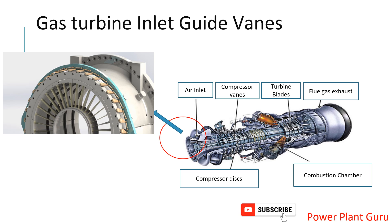In the last video we saw how air is filtered from the inlet filter house and comes to the gas turbine. Now, how do we control the quantity of air coming to the turbine? During startup it may require a small amount of air; at 50% load it will need a different amount; at full load it will need another amount. All that airflow is to be regulated and controlled — IGV does that function for the gas turbine.